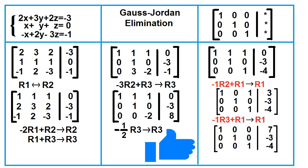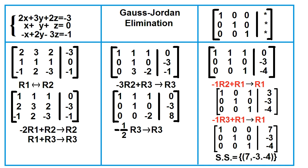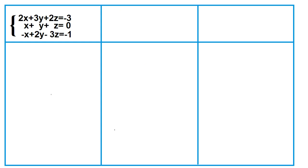The system of equations represented by the matrix in reduced row echelon form is x equals 7, y equals negative 3, z equals negative 4. The solution set is 7, negative 3, and negative 4.